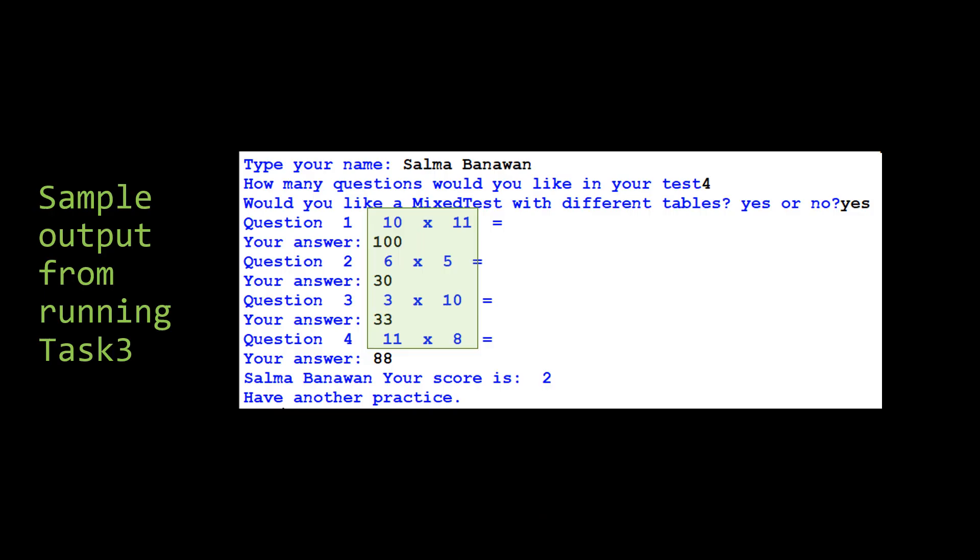So here's some sample output. I've put my name. I put I want 4 questions. And yes, I want a mixed test. As you can see, the first numbers that come out are 10, 6, 3, and 11. The second numbers are 11, 5, 10, and 8. So they don't repeat. Okay. And, you know, I only got 2 correct. So it gave me a message. Have another practice.